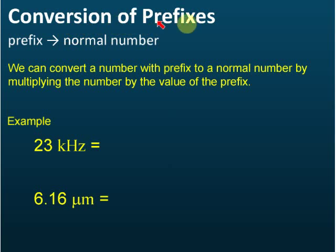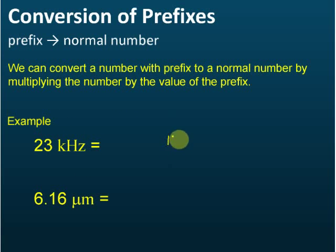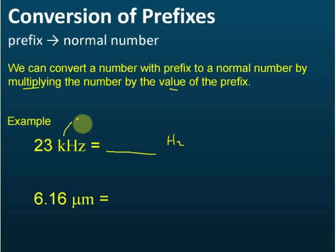Now let's look at conversions of prefixes — prefix to normal numbers. This is how to convert a number with a prefix to a normal number. We can do this by multiplying the number by the value of the prefix. For example, 23 kilohertz — hertz is the unit for frequency. If you want to write this in hertz only, without the prefix, we multiply the number by the value of the prefix. The value of kilo is one thousand.